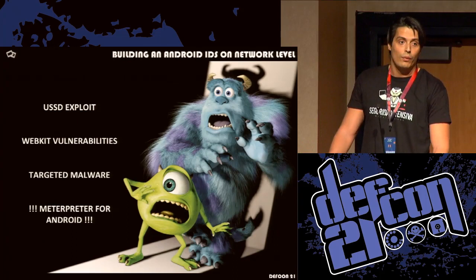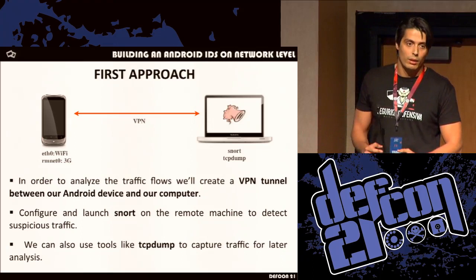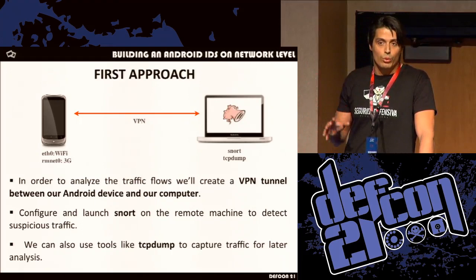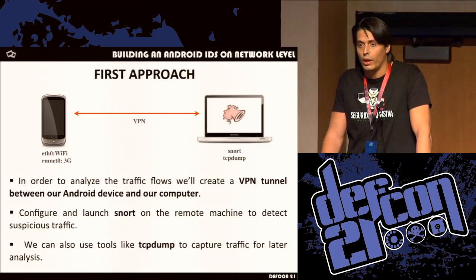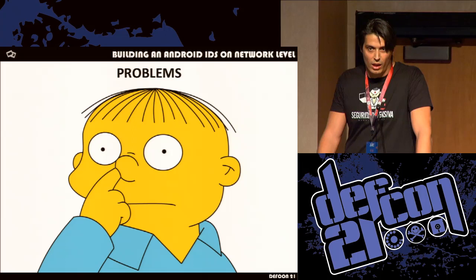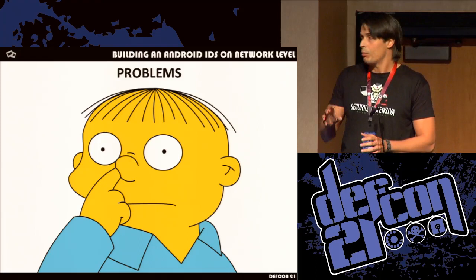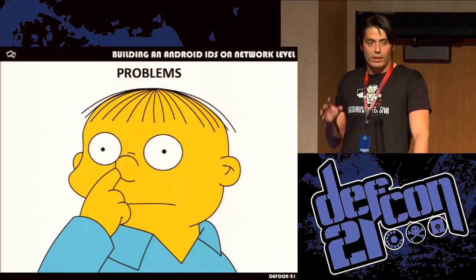I had to deal with this, and I made my first approach to solve it: I took my Android mobile phone and made a VPN tunnel with my computer, trying to analyze all the traffic passing through my device. I launched Snort on my computer to detect suspicious traffic, and I could also use tools like TCPdump for forensic analysis. But this kind of idea sucks — I had to take the traffic from my mobile phone to my computer, that's a waste of bandwidth, I couldn't act like an IPS. I could detect attacks, but only after they happened. So that made no sense.